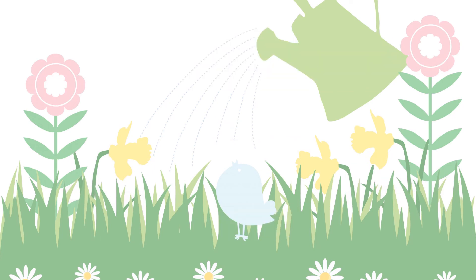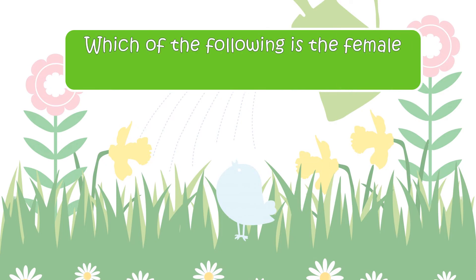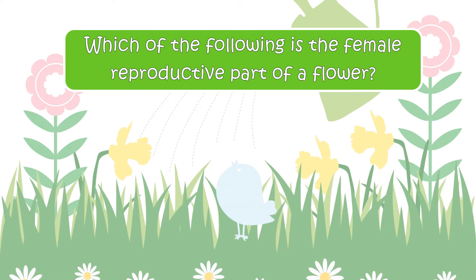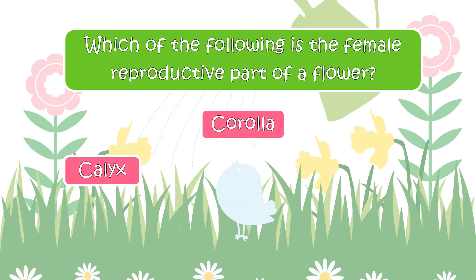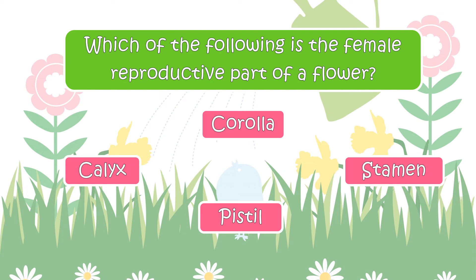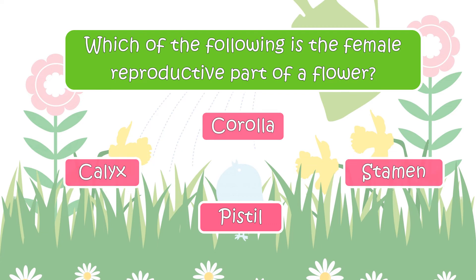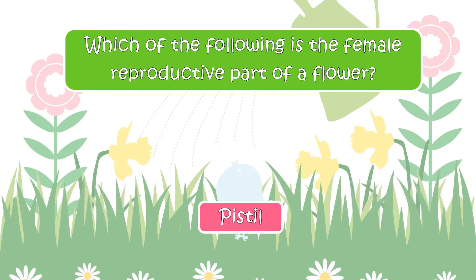The next question is: Which of the following is the female reproductive part of a flower? Your options are Calyx, Corolla, Stamen, or Pistil. The right answer is Pistil.